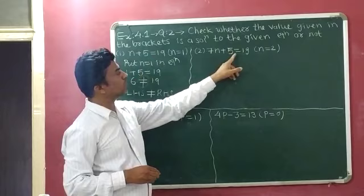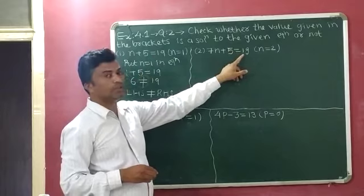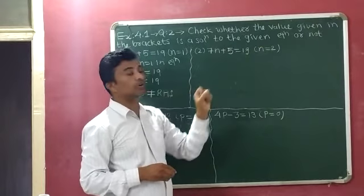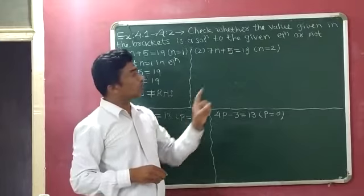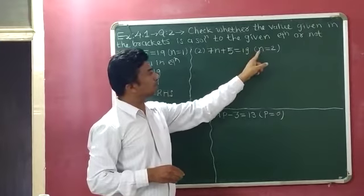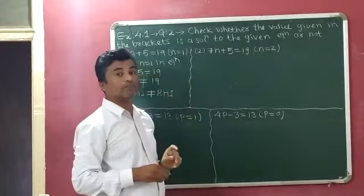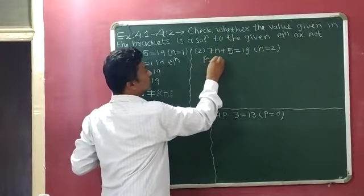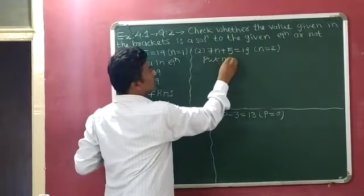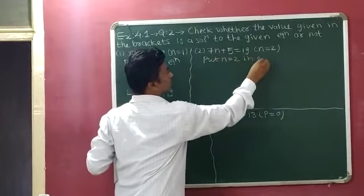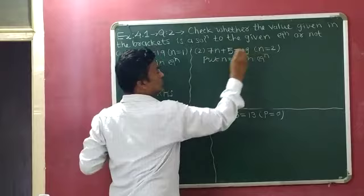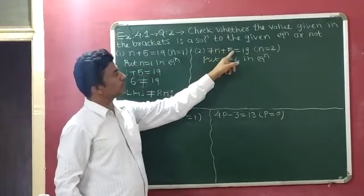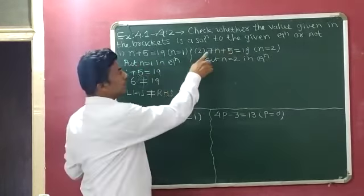Question number 2: 7n plus 5 is equal to 19, and in the bracket, n equals 2 is given to us. First, we will substitute n equals 2 into the given equation. Our equation is 7n plus 5 equals 19.